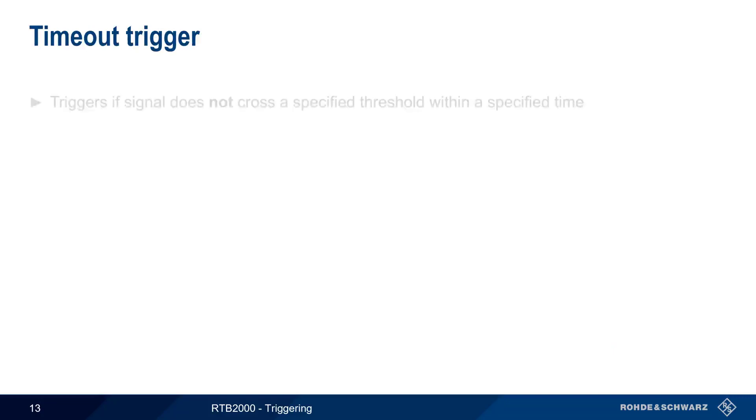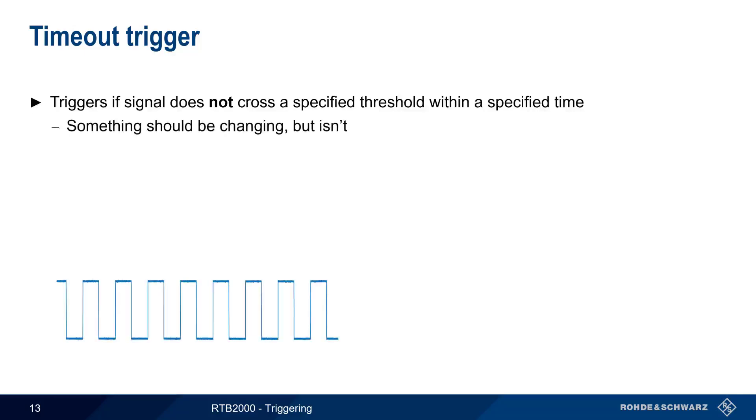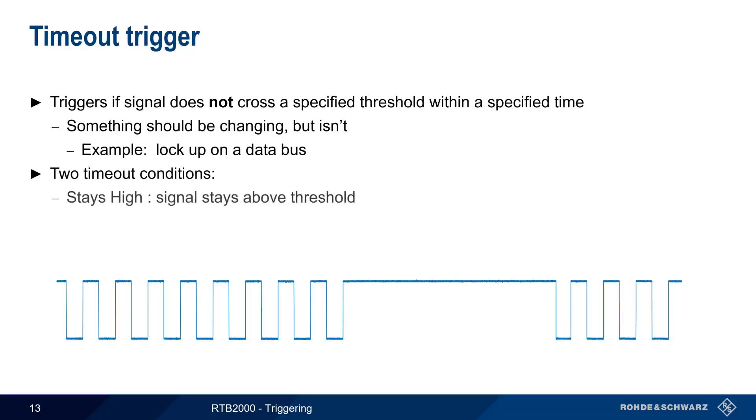A timeout trigger is somewhat similar to a width trigger, the difference being that a timeout trigger occurs if the signal does not cross a specified threshold within a specified time. Another way of saying this is that we trigger when something should be changing, but isn't, such as a lockup on a data bus. A timeout trigger can therefore occur for two different conditions: when the signal stays high, or above a threshold, and when the signal stays low, or below a threshold, longer than it should.